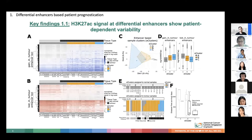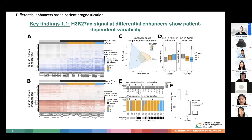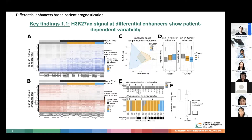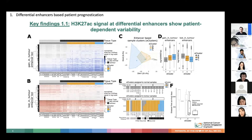Regarding the first set of findings: the differential enhancers presented either an increase or decrease in H3K27 acetyl signal in the tumor samples compared to the adjacent normal samples. We also noticed that there was patient-dependent variability — the extent of enhancer changes was not equal among the patients. By grouping patients based on the enhancer signal intensity, we discovered that the more divergent enhancer changes a patient showed, the higher the degree of dedifferentiation, higher rate of recurrence, and shorter time to recurrence.